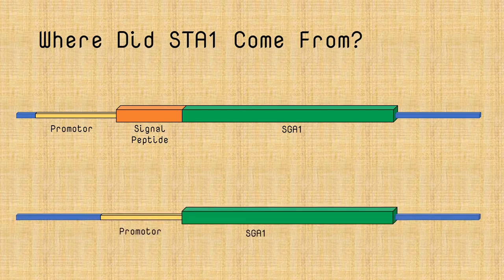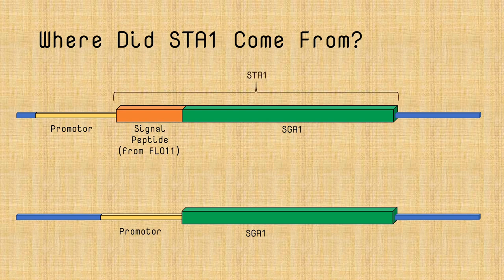So if we look at other yeast strains, we see SGA1 is there with a promoter. And the SGA1 gene and the promoter are very similar to the STA1 promoter and gene. And there seems to have been a signal peptide added. And it turns out this isn't some random signal peptide. In fact, it's from a very well-known gene called FLO11. This is one of the genes needed for yeast to form flocs and then sediment during the brewing process. So the combination of the signal peptide of FLO11 plus the SGA1 gene is the gene we called STA1. And this is the gene that makes a yeast diastatic.